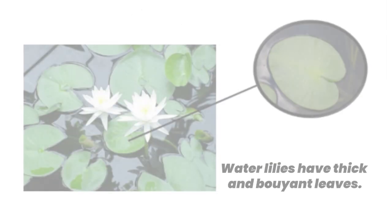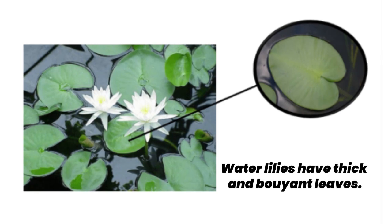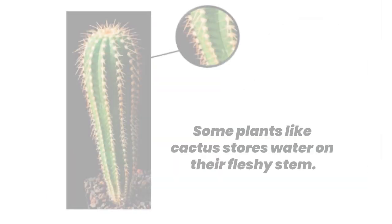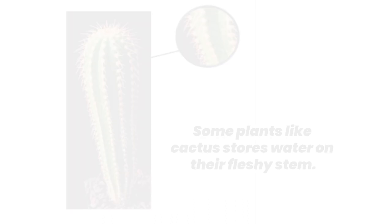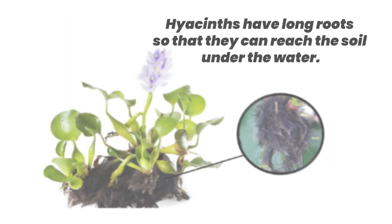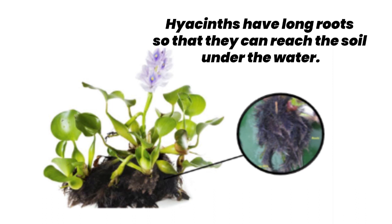Water lilies have thick and buoyant leaves. Likewise, some plants like cactus store water on their fleshy stem. Hyacinths have long roots so that they can reach the soil under the water.